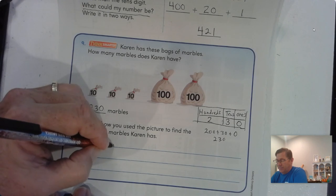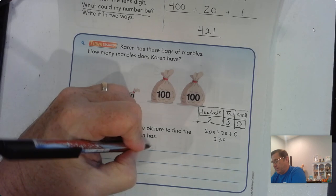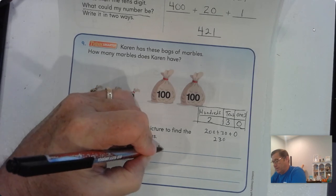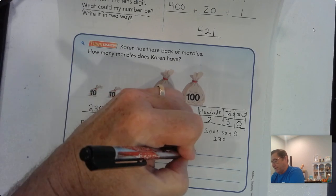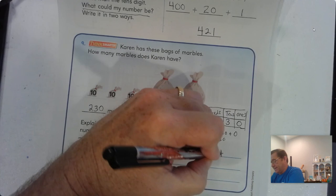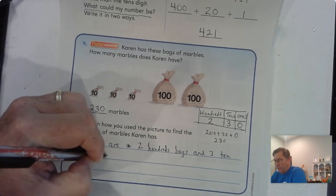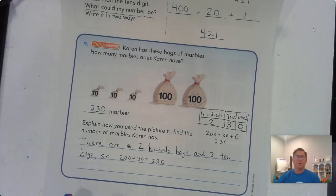And just explain it. There are two hundreds bags and three ten bags, so 200 plus 30 equals 230.